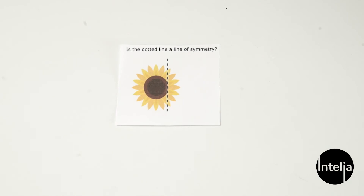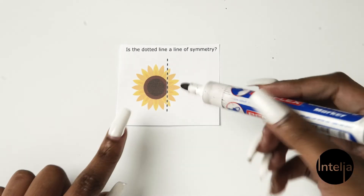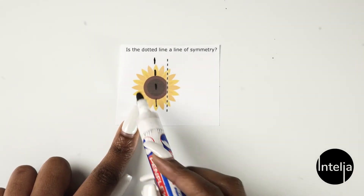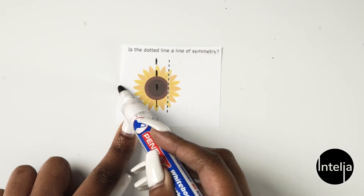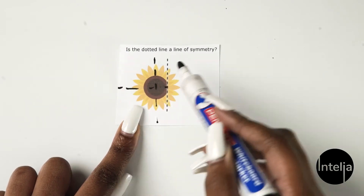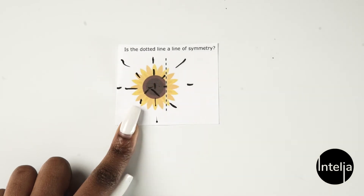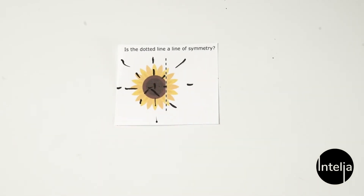The same applies to this sunflower — this is not a line of symmetry. If we had to draw the line of symmetry, it would be here, or there, or there, or there. So you can see this sunflower has multiple lines of symmetry. Remember, an object can have a lot of lines of symmetry.